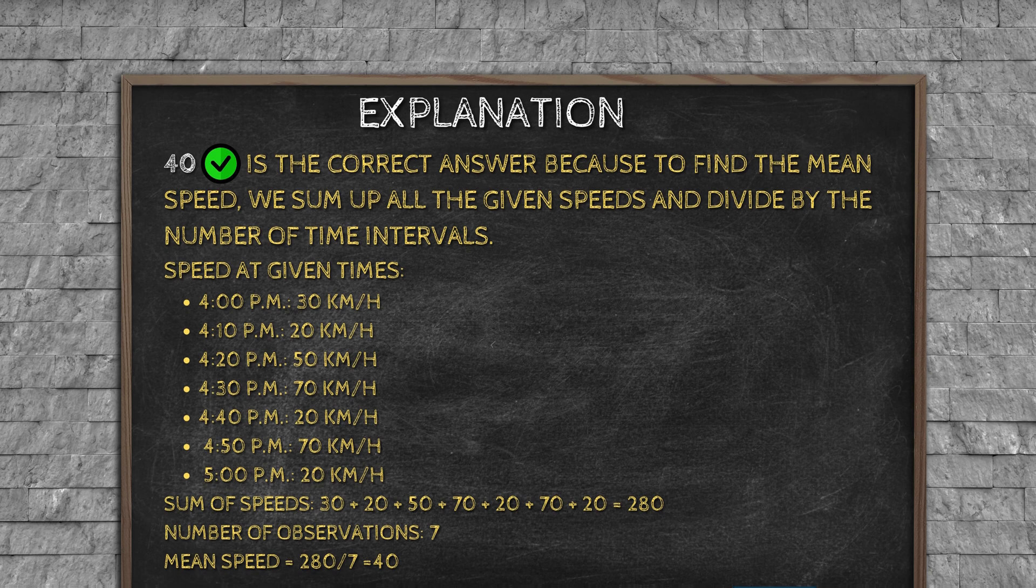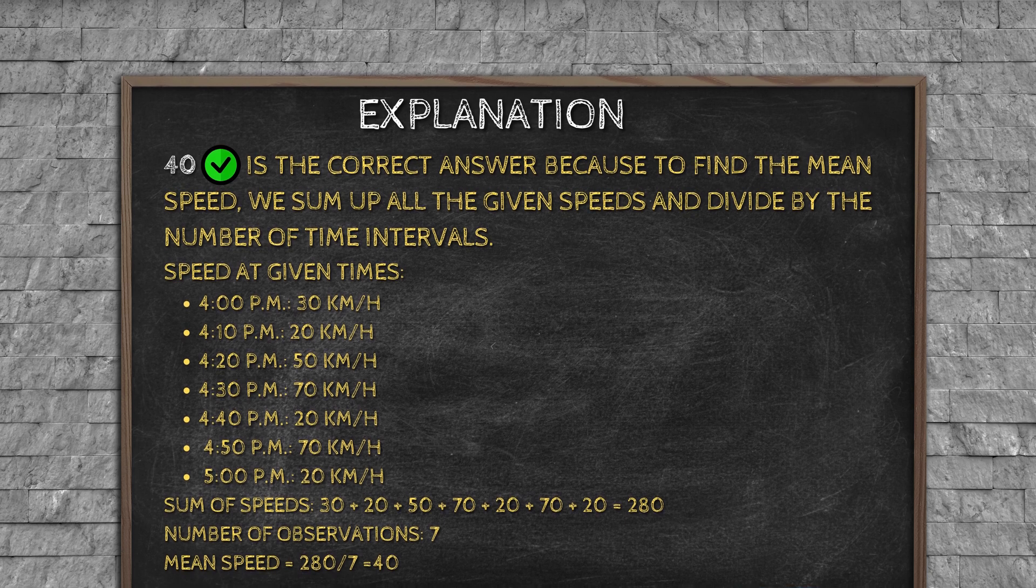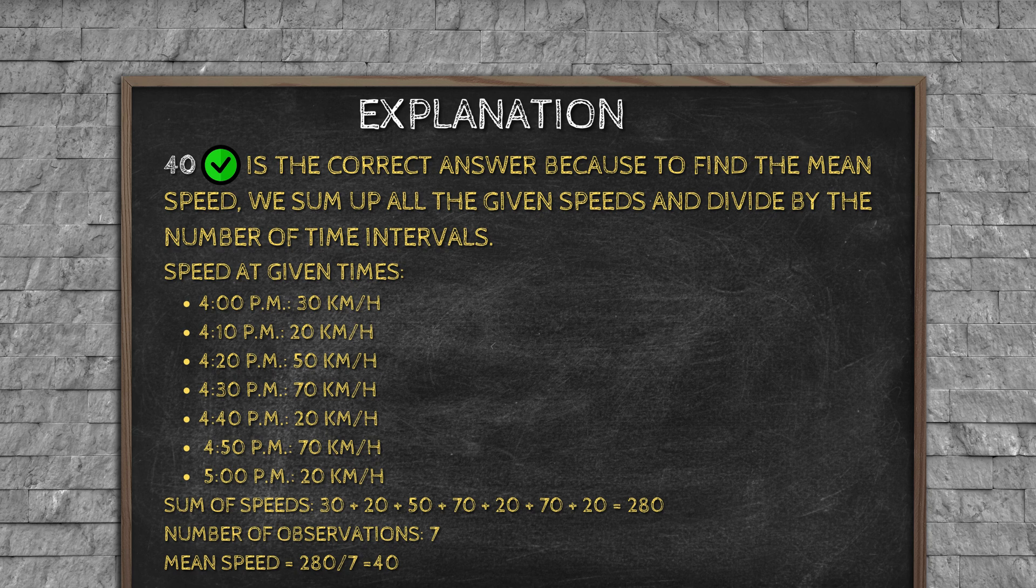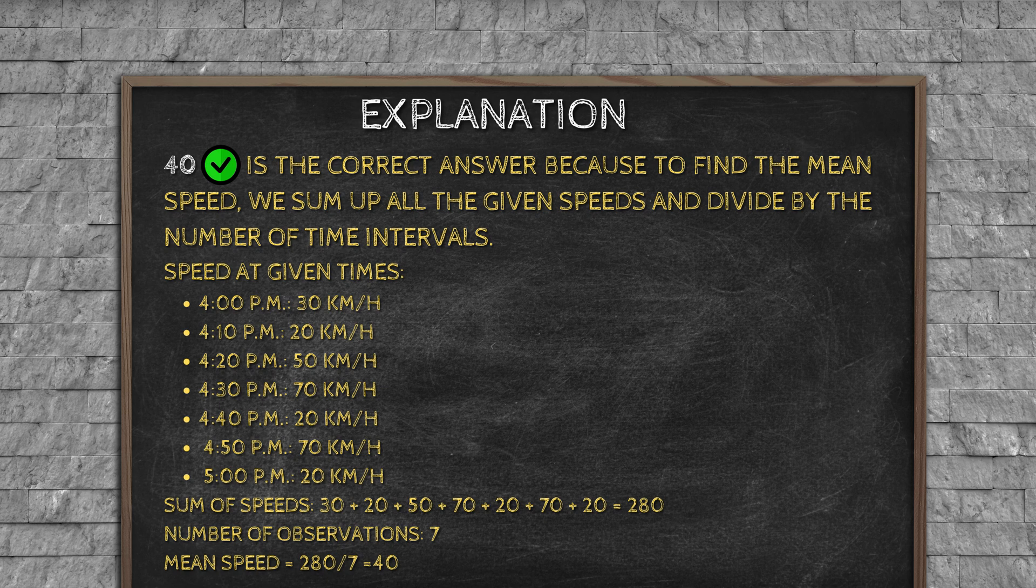Explanation: 40 is the correct answer because, to find the mean speed, we sum up all the given speeds and divide by the number of time intervals. Speeds at given times: 4:00 PM: 30 km/h, 4:10: 20 km/h, 4:20: 50 km/h, 4:30: 70 km/h, 4:40: 20 km/h, 4:50: 70 km/h, 5:00: 20 km/h. Sum of speeds: 30 plus 20 plus 50 plus 70 plus 20 plus 70 plus 20 equals 280. Number of observations: 7. Mean speed equals 280 divided by 7 equals 40.